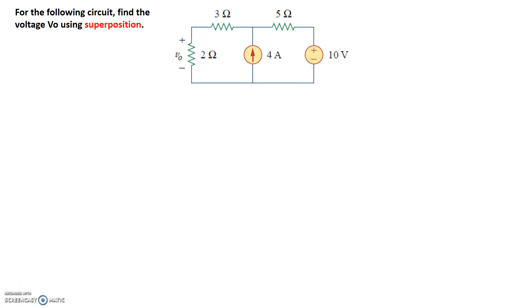Just a quick recap on the superposition principle. It basically says that because of the linearity property of this linear circuit, we can calculate the voltage across the 2 ohm resistor independently as the voltage due to the 4 amp current source and the voltage due to the 10 volt source, and then finally merge them together to get the total response at the 2 ohm resistor.